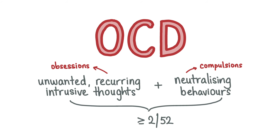Obsessive-compulsive disorder is characterized by the combination of unwanted, recurring, distressing intrusive thoughts or images — such as being contaminated or being hurt — and the performance of neutralizing behaviors to manage the distress. Compulsions can be overt, meaning seen by others, or covert, meaning not seen by others. OCD is associated with conditions like depression, schizophrenia, Tourette's and anorexia nervosa. For a diagnosis to be made, the obsessions and compulsions must be present on most days for at least two weeks, must be repetitive, distressing, not pleasurable and not resistible, and must also be interfering in the patient's day-to-day life.